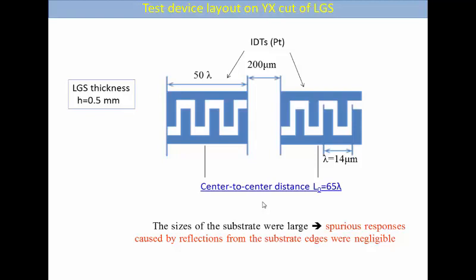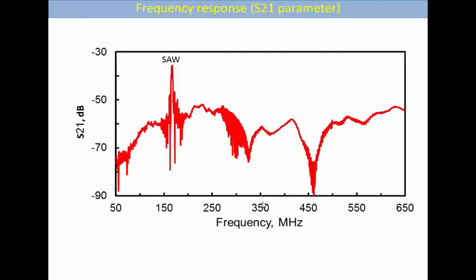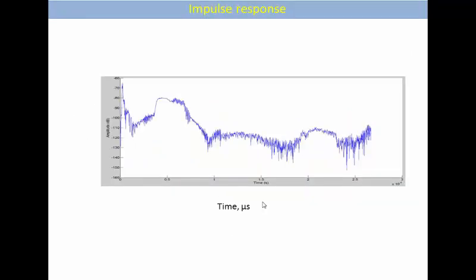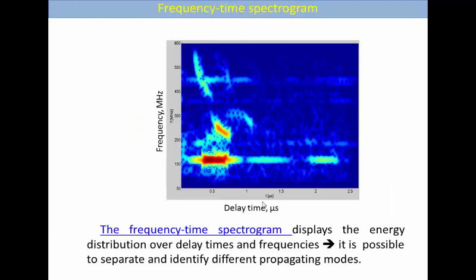This is the layout of our test device. It's rather simple: two IDTs with platinum electrodes, 50 wavelengths each, were deposited on LGS substrate of standard thickness 0.5 millimeters with center-to-center distance 65 wavelengths, and wavelength is 14 microns. It's important that the sizes of our substrate were large enough so that the spurious responses caused by reflections from the substrate edges were negligible in our measurements. This is a measured frequency response in a wide range from 50 to 650 megahertz and the impulse response. This measurement data was finally transformed into the frequency-time spectrogram.